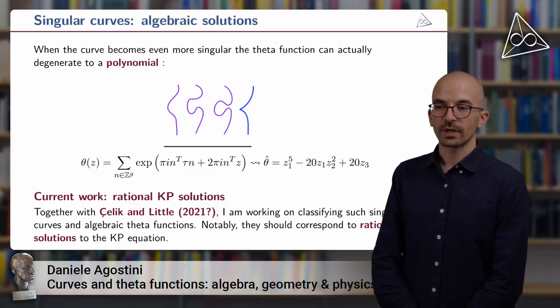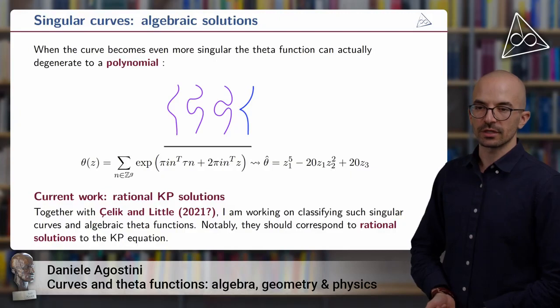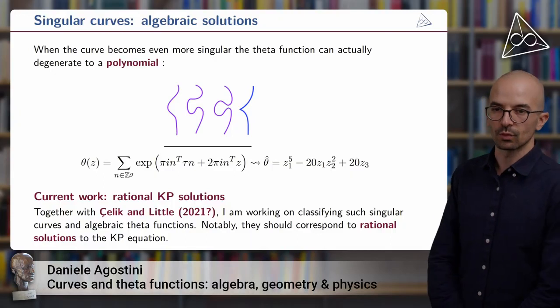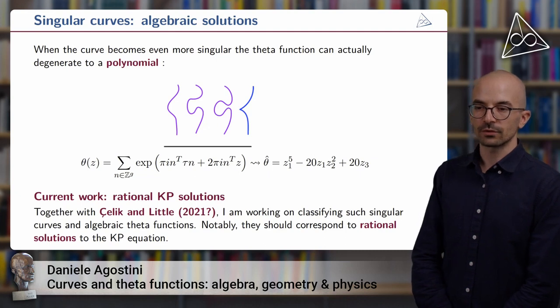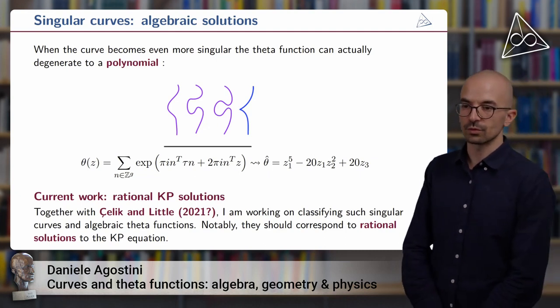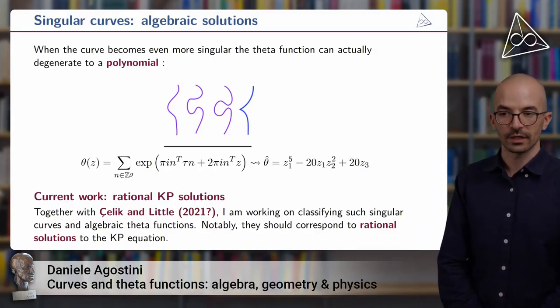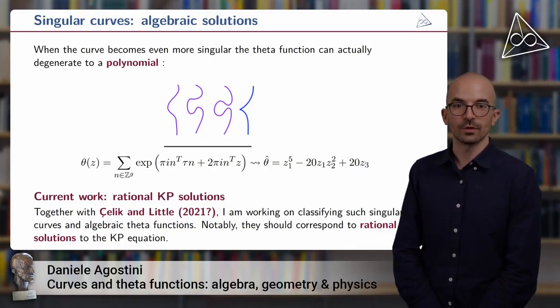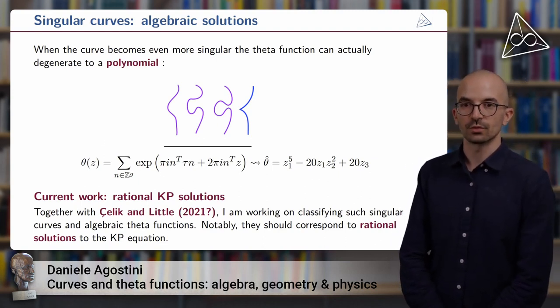Well, in this case, one can show, at least in some examples, that the corresponding theta function, which is usually a holomorphic function, so a power series, degenerates to a simple polynomial. So it collapses down to a sum of finitely many monomial terms. So I'm working together with Türkü Çelik and John Little in classifying such singular curves and the corresponding algebraic theta functions. It's remarkable that such geometric entities should correspond to rational solutions to the KP equation.